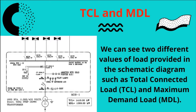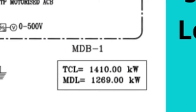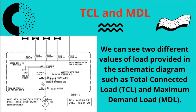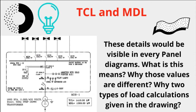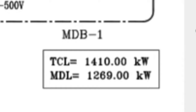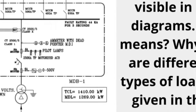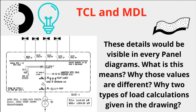In the schematic diagram, we can see two different values of load: Total Connected Load and Maximum Demand Load. These details are visible in every panel diagram. What do these mean? Why are those values different? Why are two types of load calculations given in the drawing?